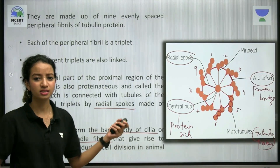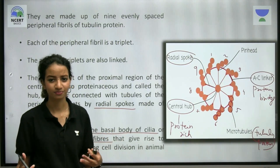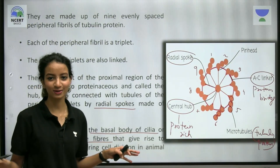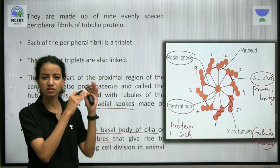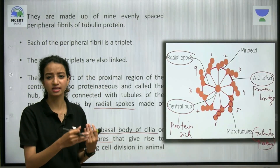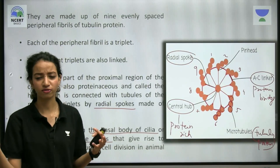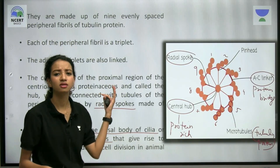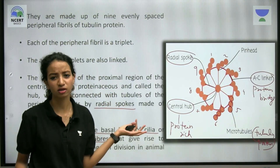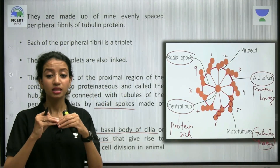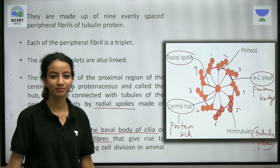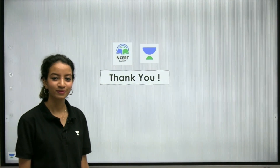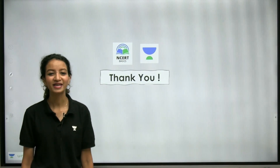I hope cytoskeleton, cilia and flagella, and centrosome and centrioles are now clear to you. All these structures are connected — cytoskeleton has microtubules and microfilaments made up of proteins; cilia and flagella are made up of microtubules; and centrioles are also made up of microtubules, but remember the arrangement of microtubules is different in each. Thank you.